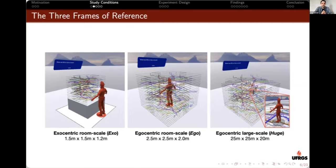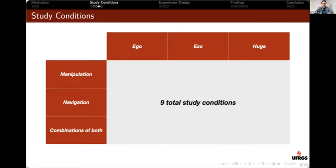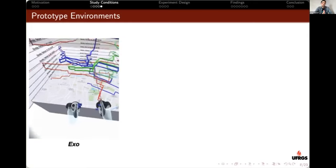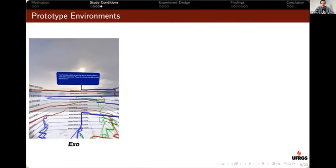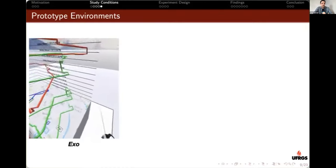In the first two modes, the data fits inside a room-scale environment. On the right, we also have the egocentric large-scale mode where the user is unconstrained by physical space and can explore all parts of the data in a much larger virtual environment. Besides these three frames of reference, we also defined three representative exploration modes: users can move the data using hand controllers or hand tracking, move themselves inside the data by walking, or fly in 3D space using a flying platform.